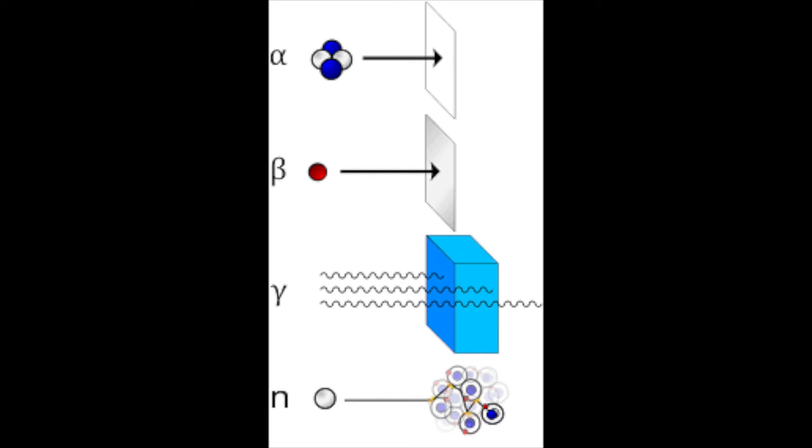They are strongly ionizing because they bash into lots of atoms and knock electrons off. This creates a lot of ions, hence the term ionizing. So that means that as they're big they bash into things instead of avoiding things.